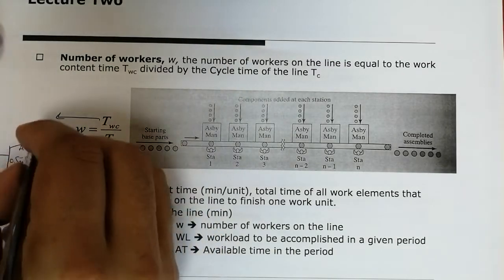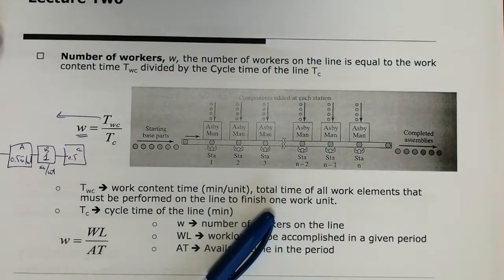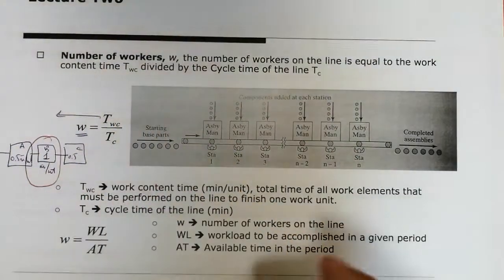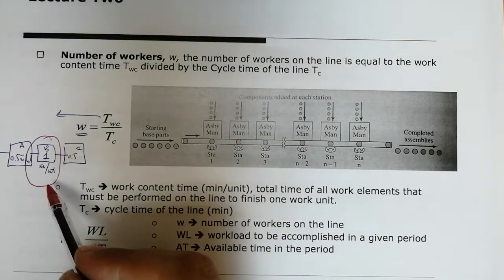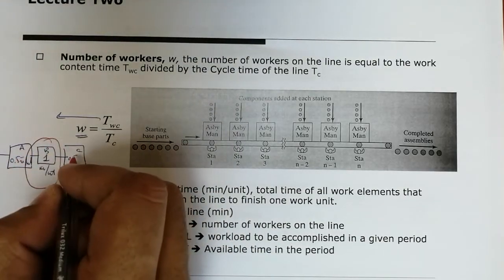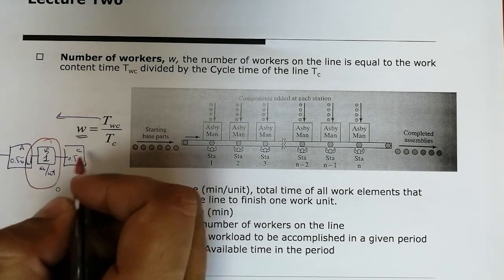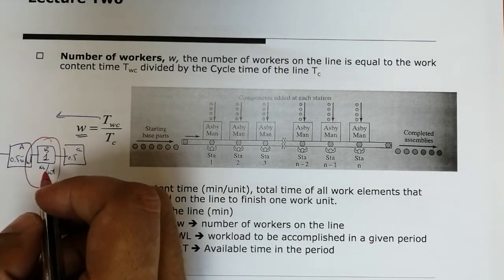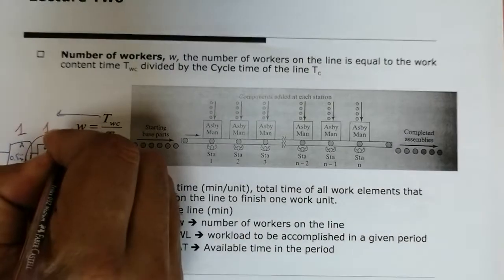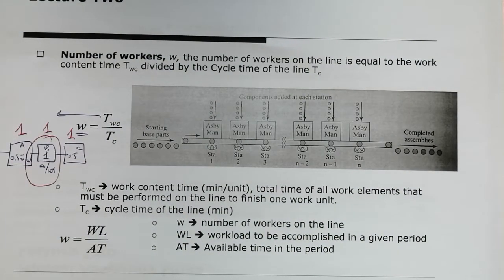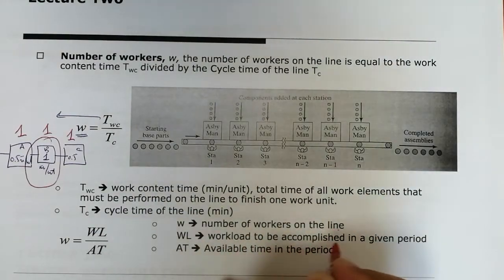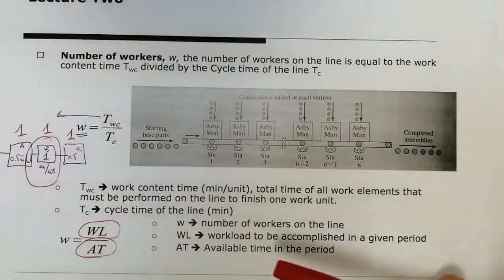If the bottleneck is 1 minute per unit, and we must produce at this speed, each step will be assigned 1 minute because the system speed equals the bottleneck speed. The number of workers on the line is the workload to be accomplished in a given period divided by the available time. Workload is RP times TWC, and since TC equals 60E over RP, this simplifies so that the number of workers W equals 60E times TWC divided by TC, equal to RP times TWC.